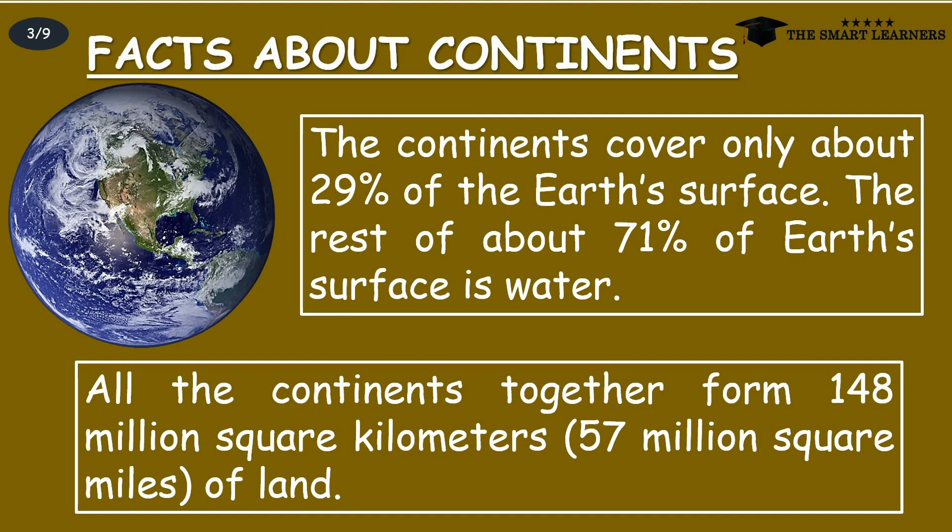The continents cover only about 29% of the Earth's surface. The rest — about 71% — is water. All the continents together form 148 million square kilometers, or 57 million square miles, of land.